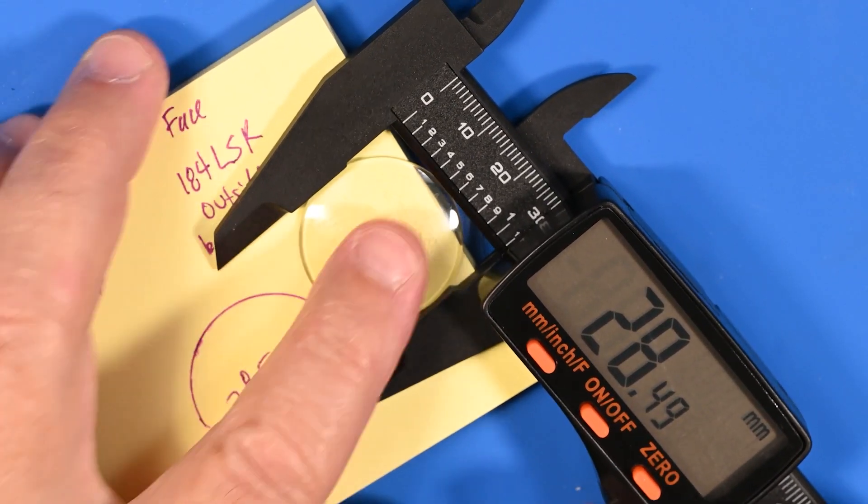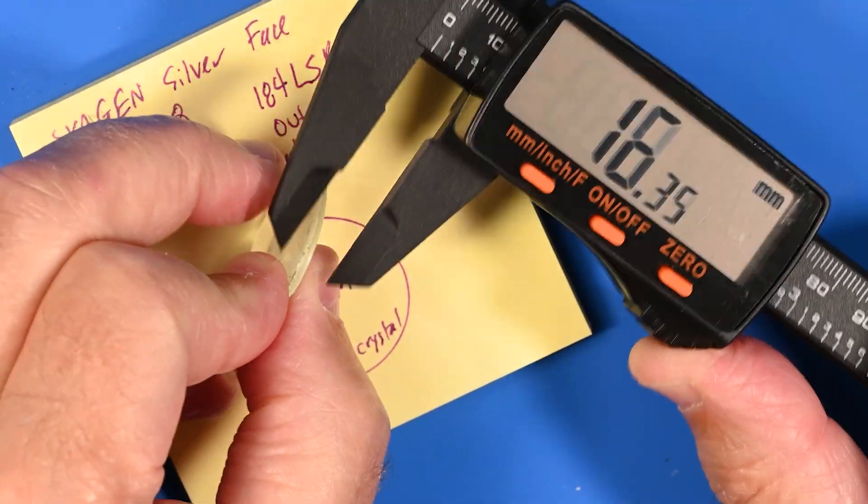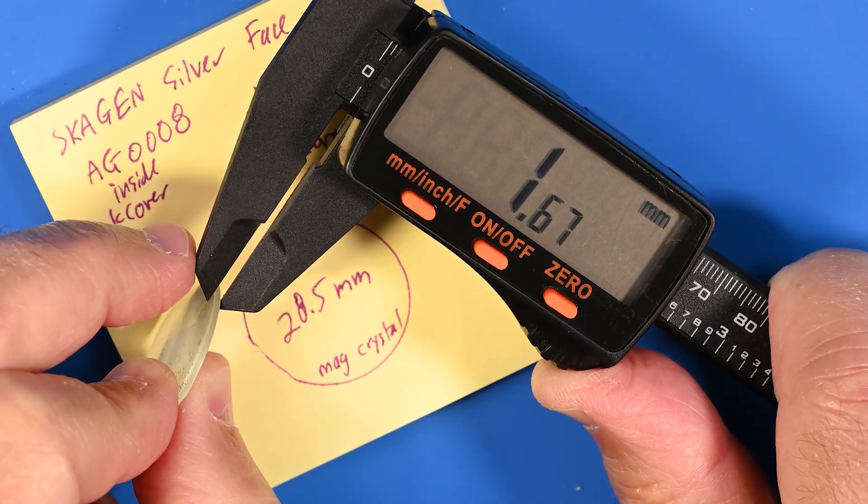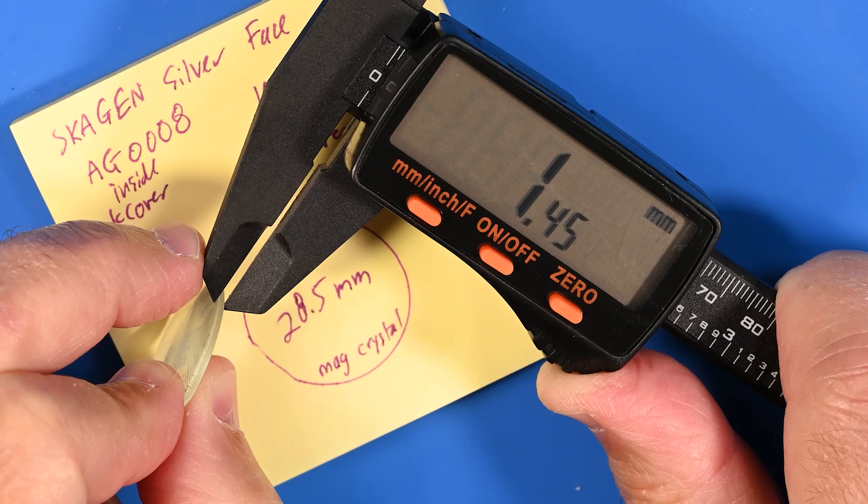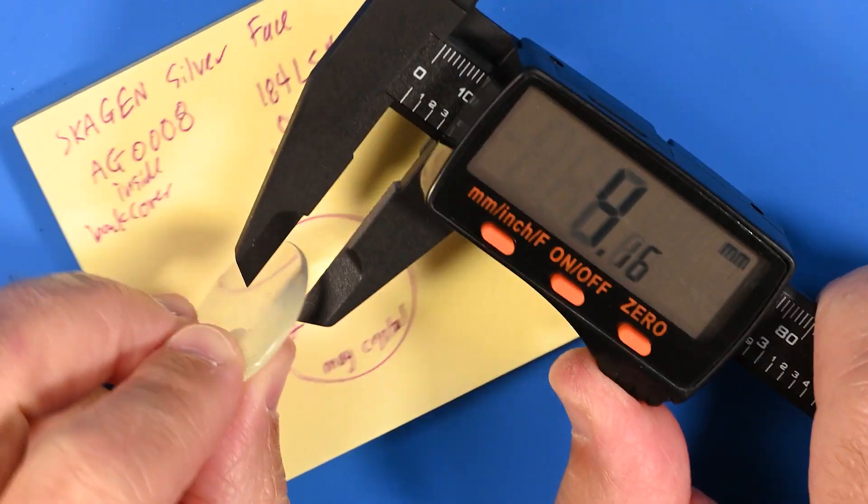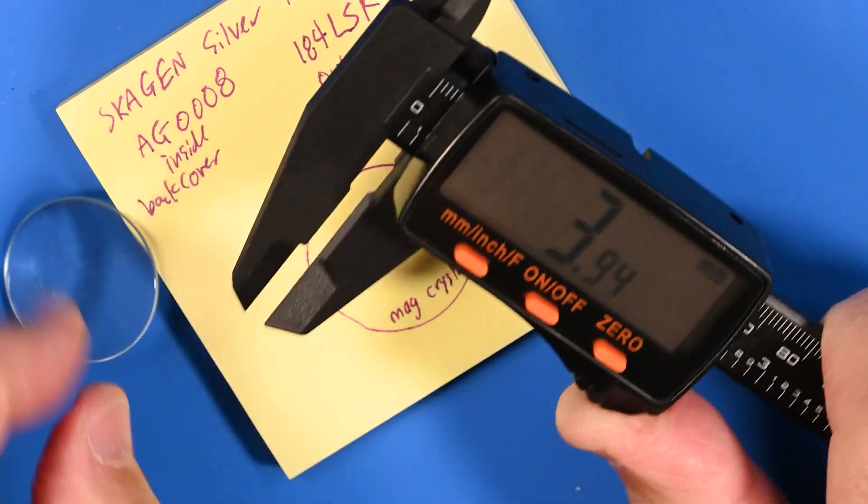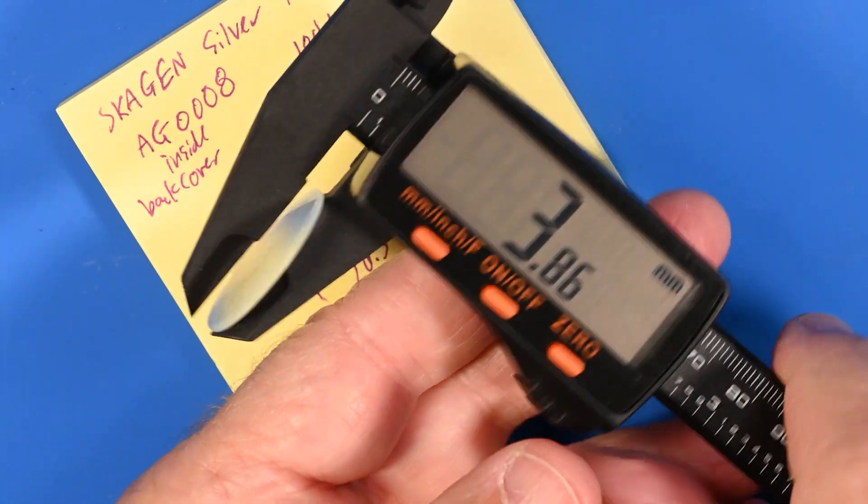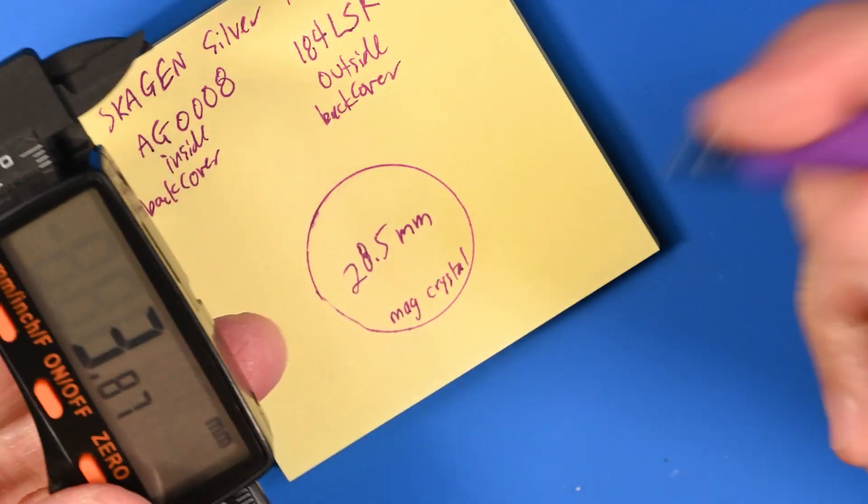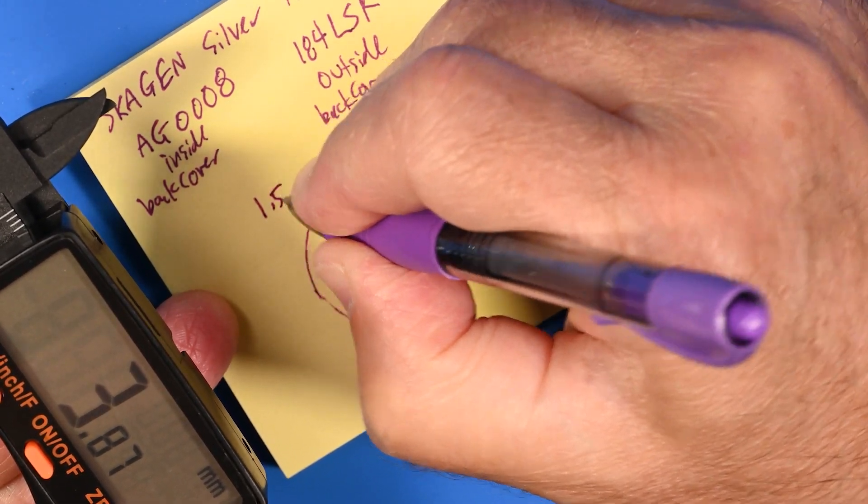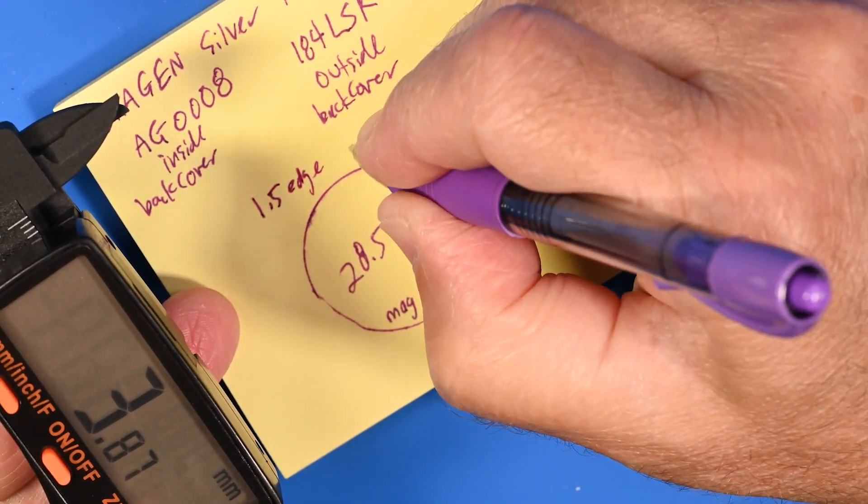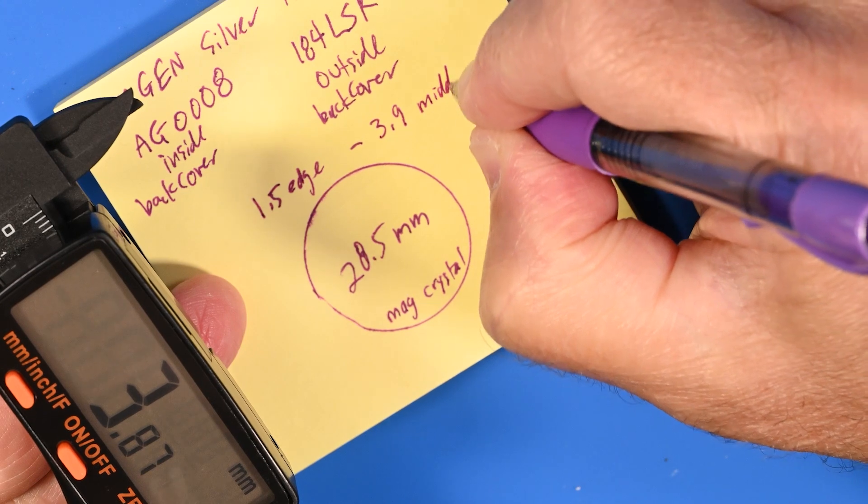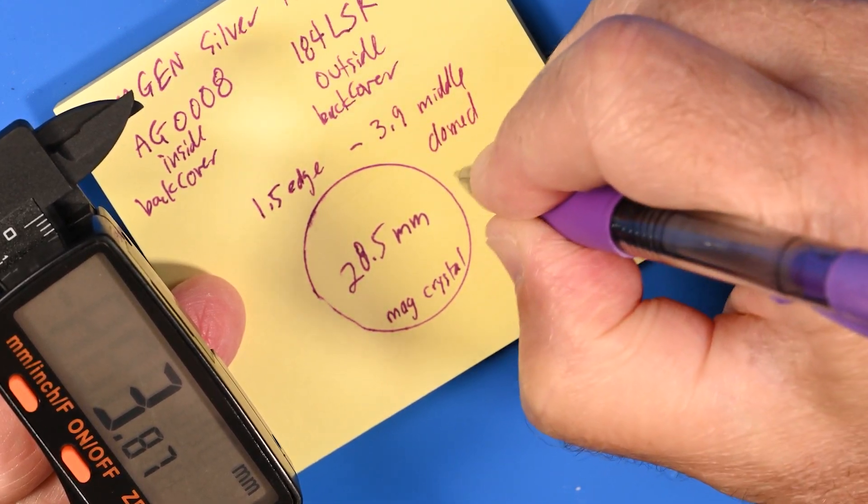One more time just to make sure. And how thick is it at the edges? Let's take a look here. 1.45. So we'll call it 1.5 at the edge and at the height of the dome. That's tall. 3.85. So I don't know that that really matters. 1.5 edge. 3.9 middle domed glass.